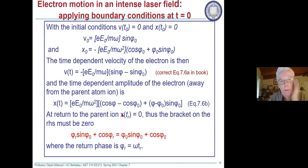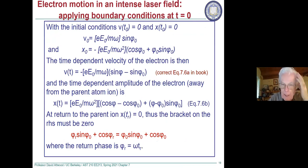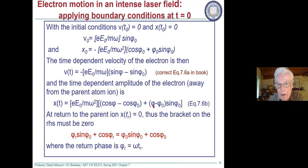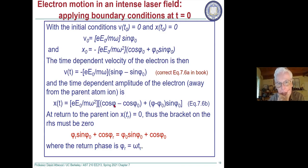The position away from the atom as a function of time depends on the phase Omega*t compared to when it was born. At the return to the parent ion — the return time phi_r — the position must equal zero. For this to be zero at the return time, this sine/cosine term has to be zero, so we have to solve this as a function of time.